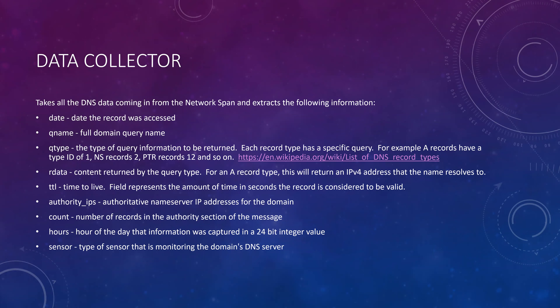The data field is the content returned by the query type — if you're looking for a type ID of one (an A record), it returns an IPv4 address. TTL (time to live) represents the amount of time in seconds the record is considered valid. The authority IPs field contains the authoritative name server IP addresses for the domain. The count is the number of records in the authority section. Hours captures the hours of the day the information was captured in a 24-bit integer value. The sensor field indicates the type of sensor monitoring the domain's DNS server — for this project, the majority were active DNS sensors.